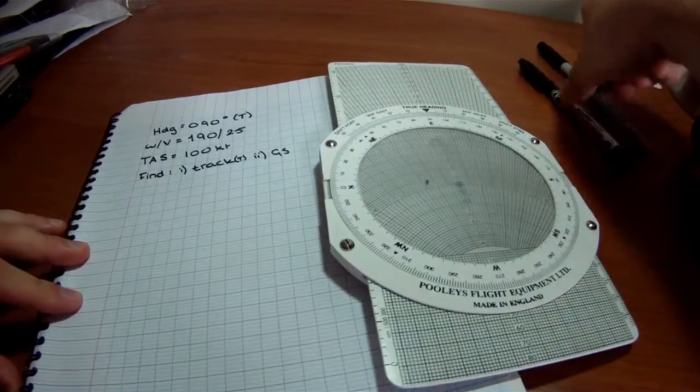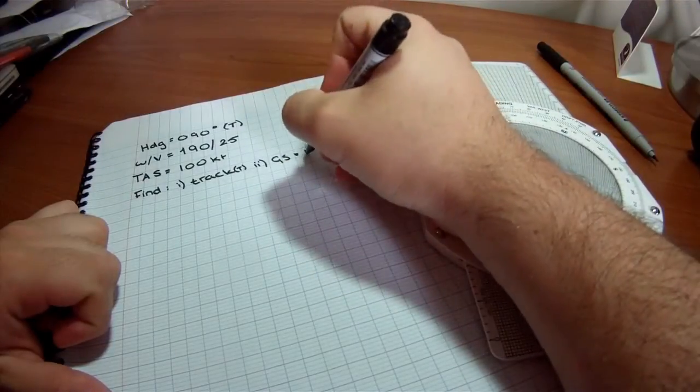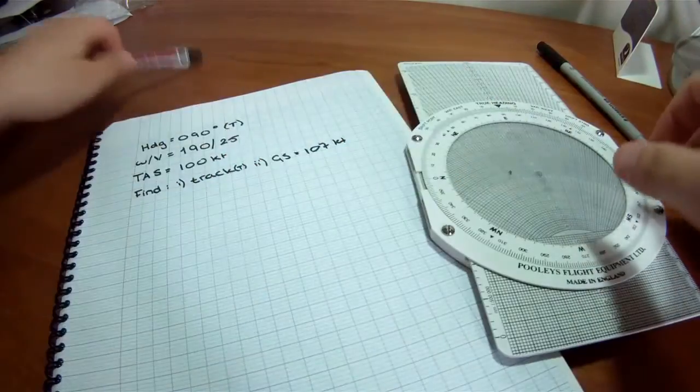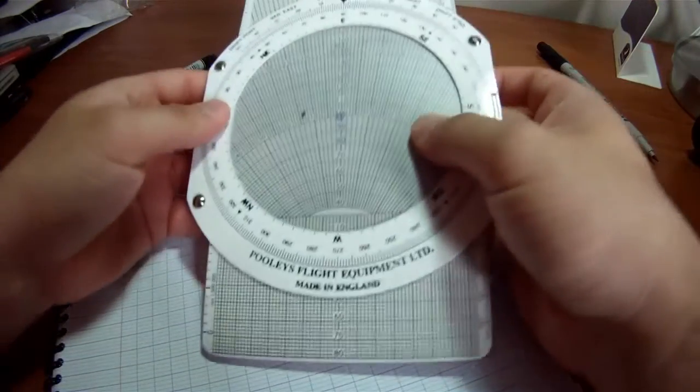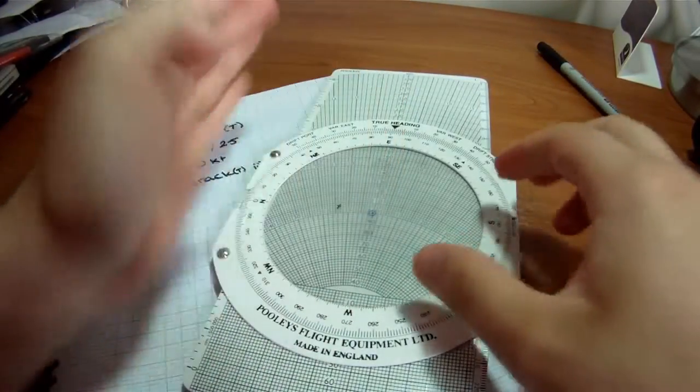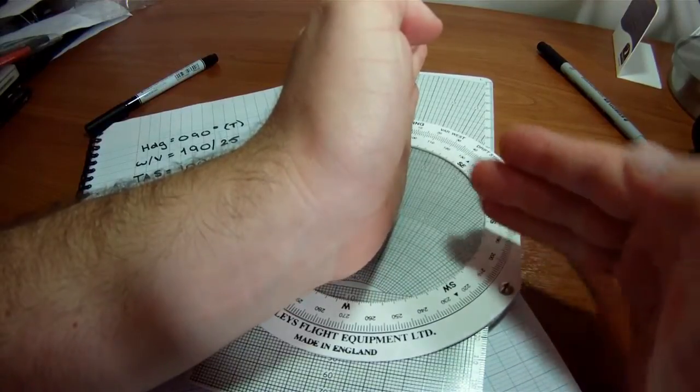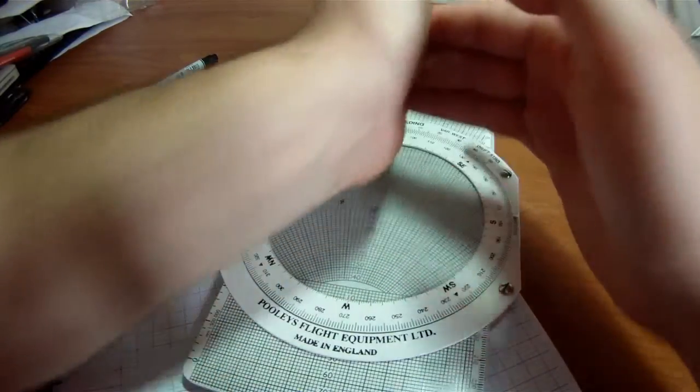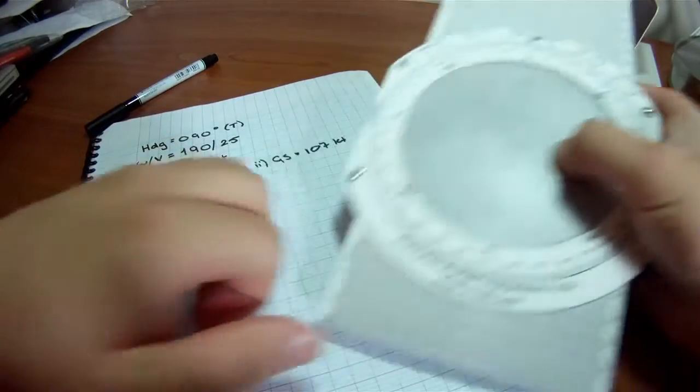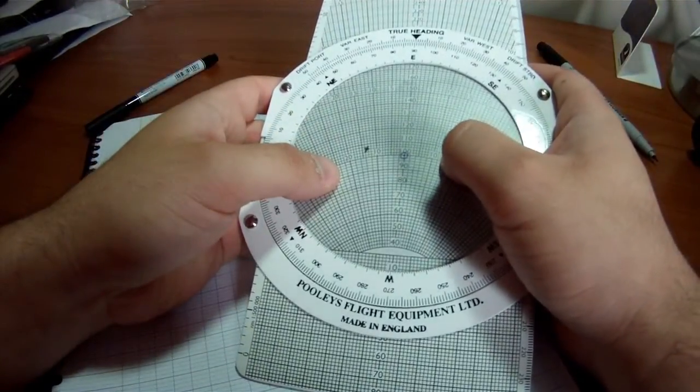So, we have a ground speed of 107 knots. And if you think about it, it sounds right because if you're flying in this direction and the wind is coming from here, you're going to have a slight drift and a bit of a tailwind, a very small amount of tailwind, but it's going to be there. So, you're going to be going a bit faster than your true airspeed.